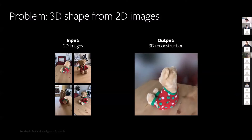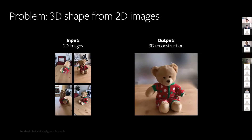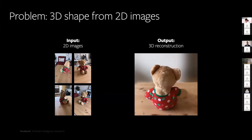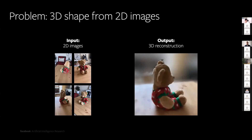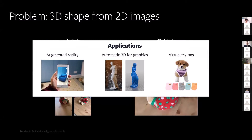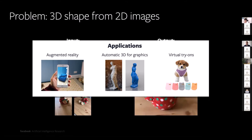Throughout this work, we will be interested in the problem of learning the 3D shape from 2D images. Imagine that we have four images of a teddy bear here on the left, and essentially our goal is to reconstruct the geometry and appearance of the teddy bear, the main object in the center of the scene, such that we can render it from novel viewpoints. This capability opens a lot of interesting applications, ranging from augmented reality where we can transport objects between different realities, to automatic generation of models for 3D graphics, or even virtual try-ons of clothes.